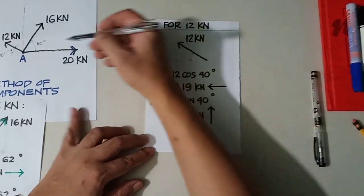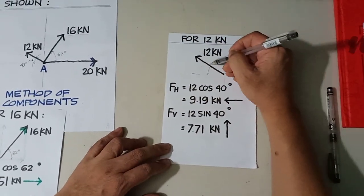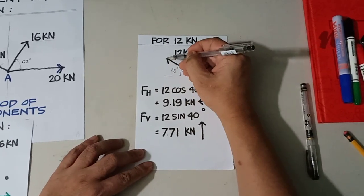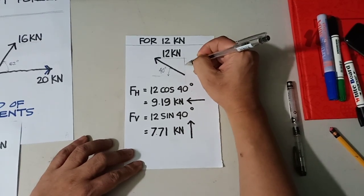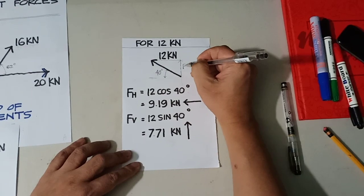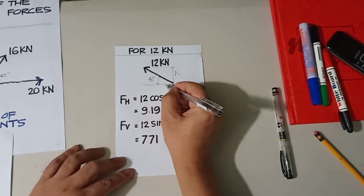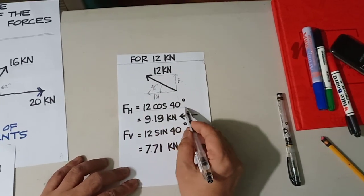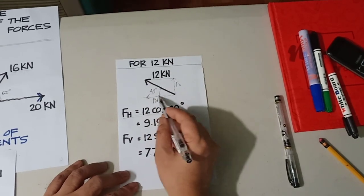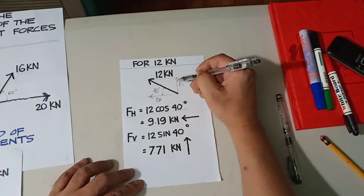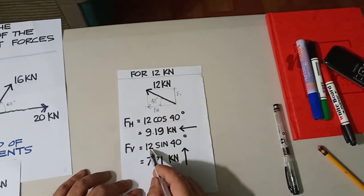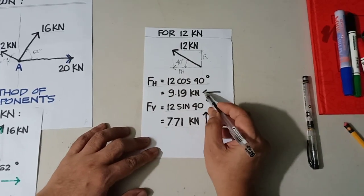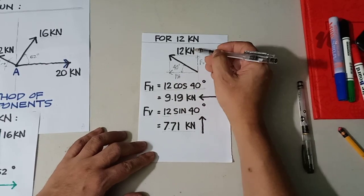Now let's solve for the 12 kilonewton force, which is acting to the left at an angle of 40 degrees. Again, you can form a rectangle giving a vertical component Fv and a horizontal component Fh. Fh is equivalent to 12 cosine of 40 degrees, which is 9.19. Fv is equivalent to 12 sine of 40 degrees, which is 7.71. The vertical force is acting upward and the horizontal force is acting to the left.